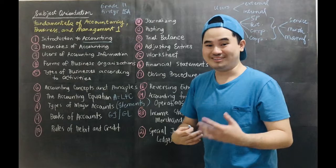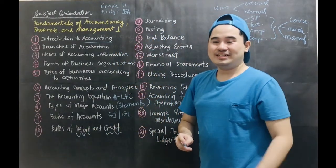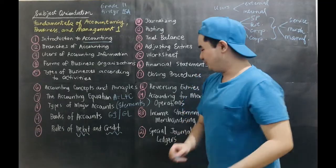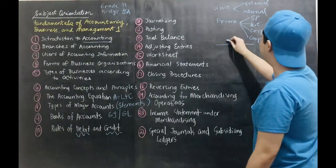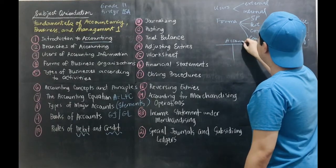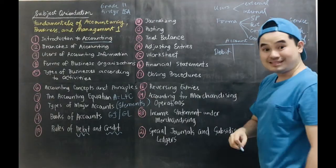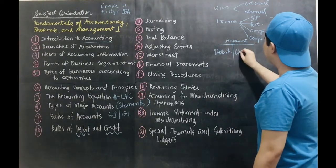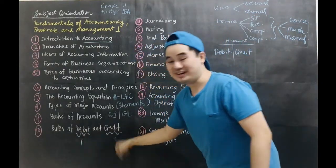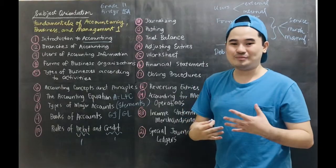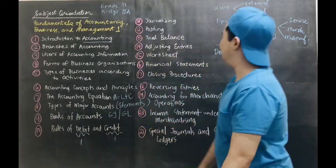We will also be talking about the rules of debit and credit. You'll be hearing the words debit and credit. So take note of this: debit and credit. Just to give you an overview, let's say for example, this is an account. This is what you call a T-account. This is an account. The left side of the account is called the debit side, and then the right side of an account is called the credit side. So this is left, this is right. We will be talking about the rules of debit and credit in the video for number 10.